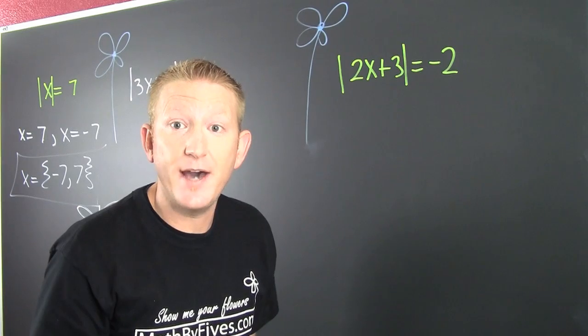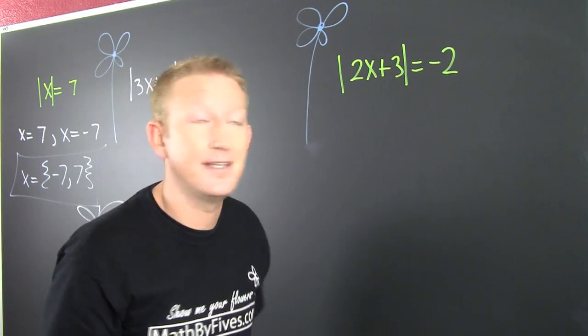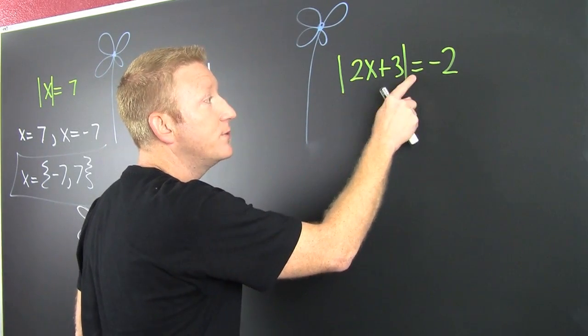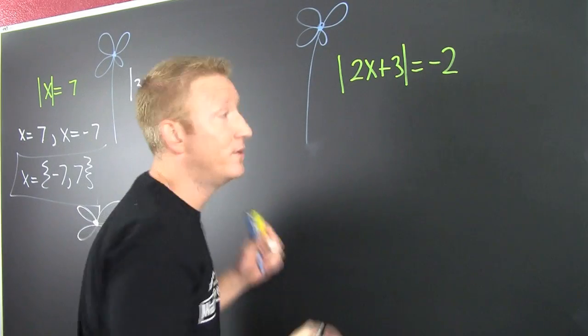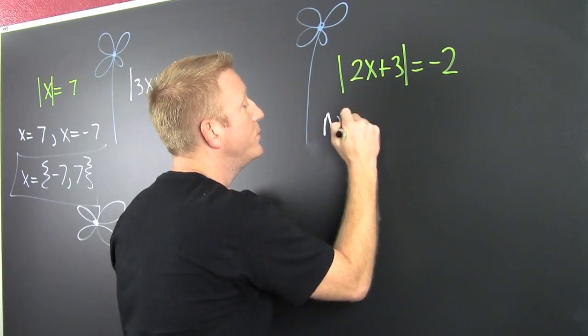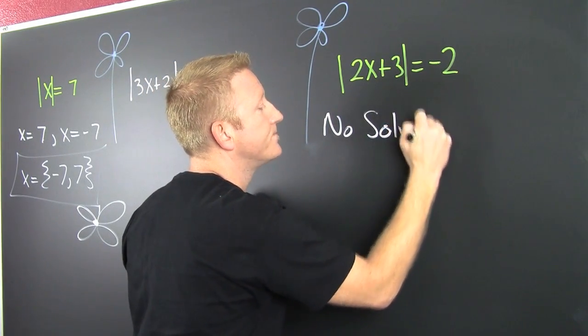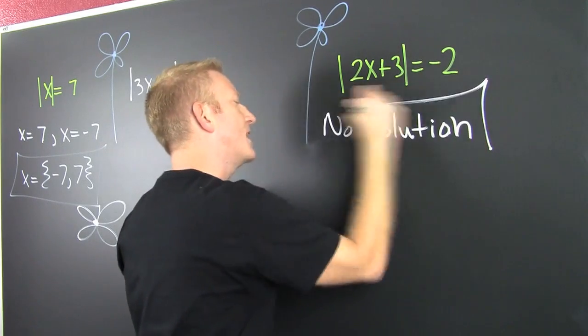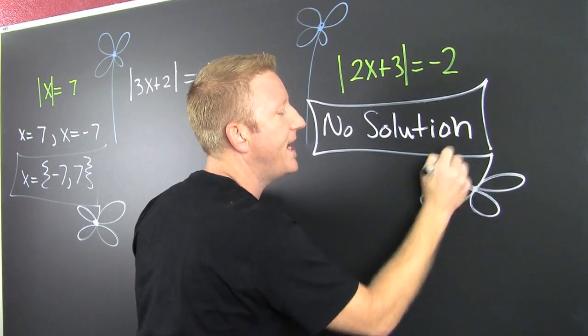Because slang dog, absolute value makes things positive. Can you have the absolute value equal to a minus number? No! So here, this is no solution. I can't do it homie. It can't be done.